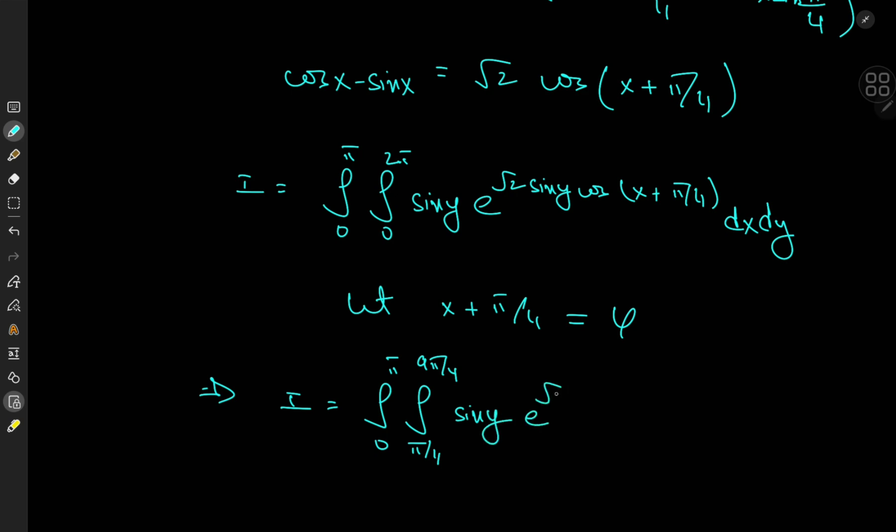sine of y times e to the root 2 sine of y times the cosine of phi, and of course dx transforms into d phi and we have a dy term as well.